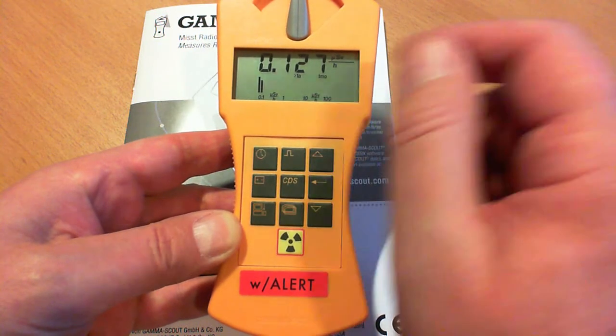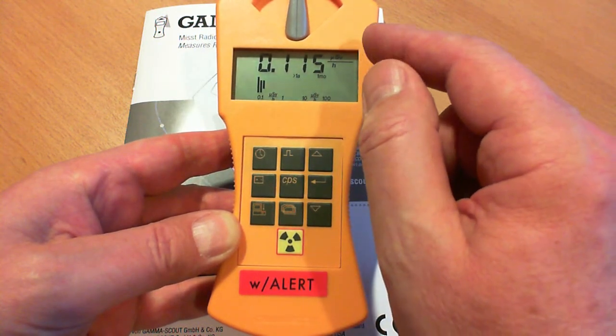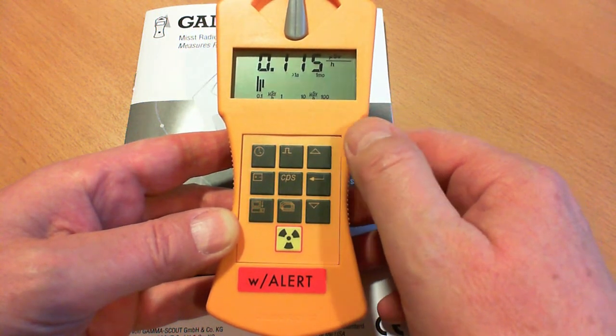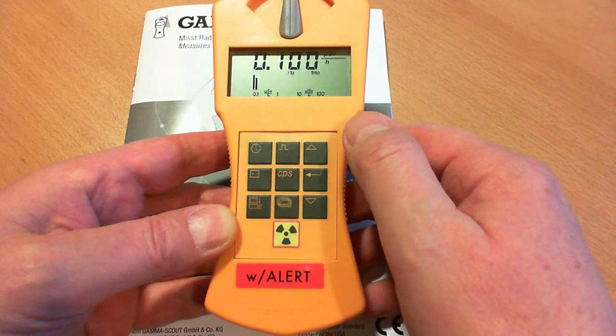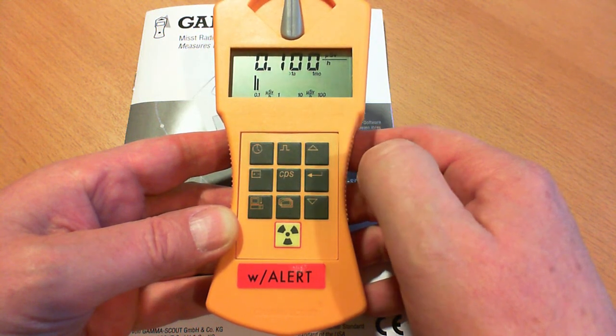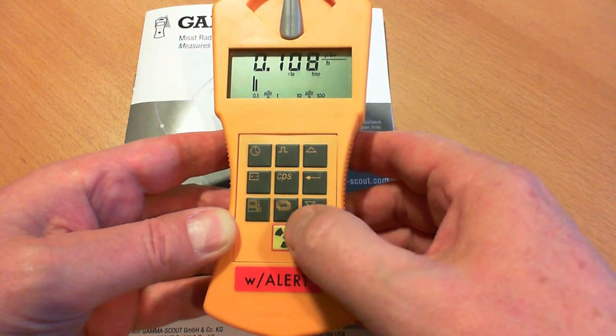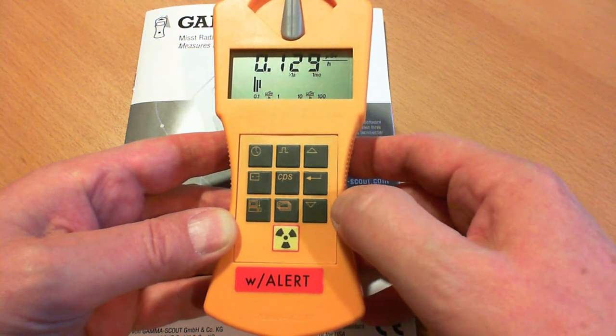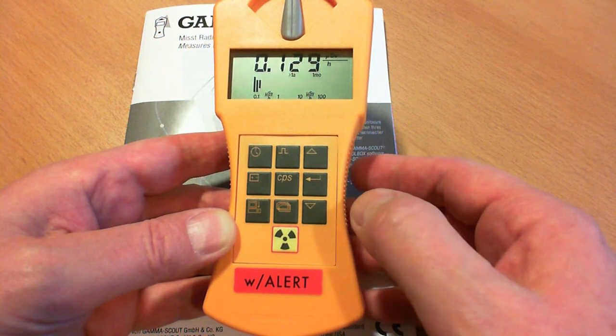0.127 microsieverts per hour was the average yesterday. When I got the device I could measure a lower value. That was because with the post there was smaller radiation, and here in the room probably a higher radon burden.